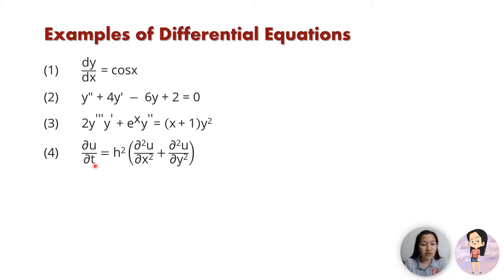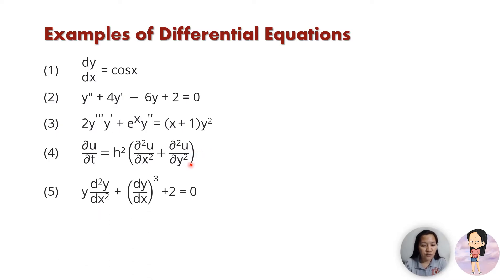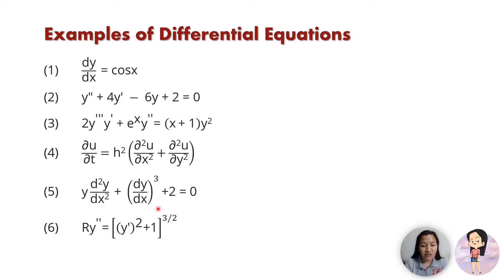Number 4: the partial of u with respect to t equals h² times the quantity of the second partial of u with respect to x plus the second partial of u with respect to y. Number 5: the second derivative of y with respect to x plus the derivative of y with respect to x raised to the power of 3, plus 2, equals 0. Number 6: ry'' equals the quantity of (y')² + 1 raised to the power of 3/2. All of these use different notations for the derivative, and they are all examples of differential equations.